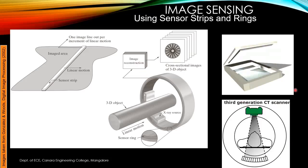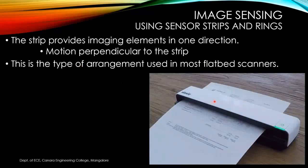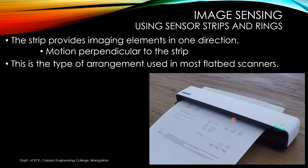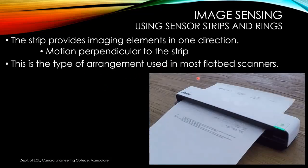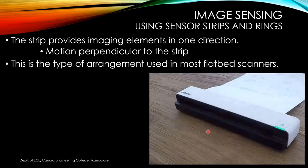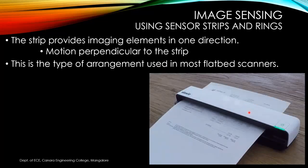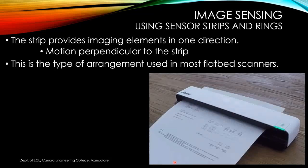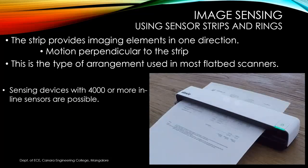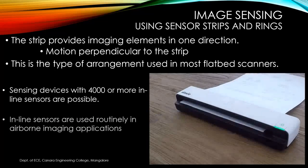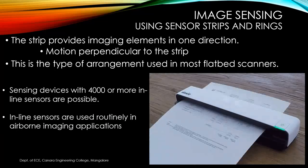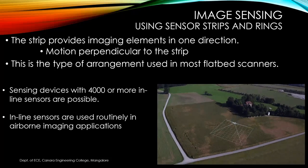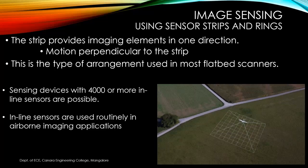The strip has imaging elements in one direction and the document moves in the perpendicular direction. This arrangement is used in most flatbed scanners and photocopiers. You can have 4,000 or more inline sensors. Sensor strips are also routinely used in airborne imaging applications for area scanning or terrain mapping — mounted beneath a plane wing-to-wing, flying over the area to scan it.